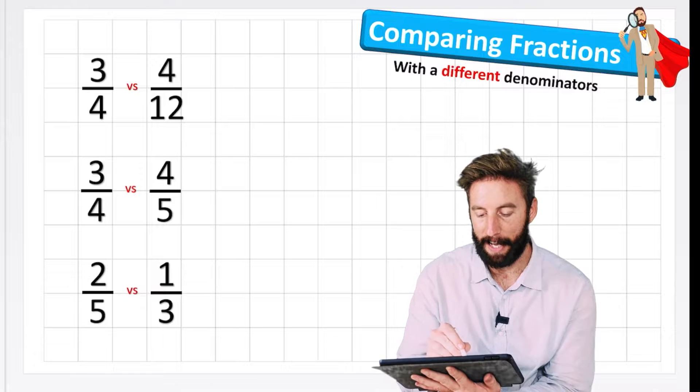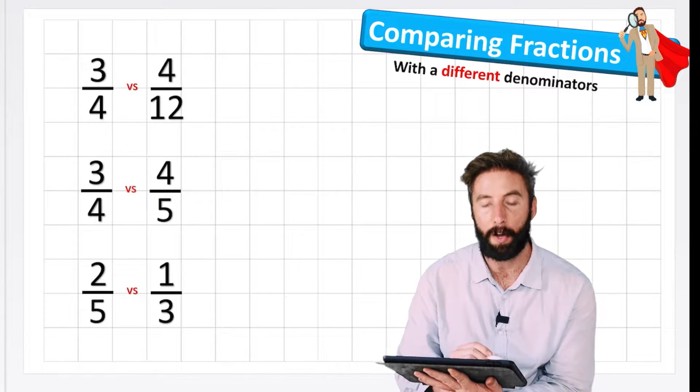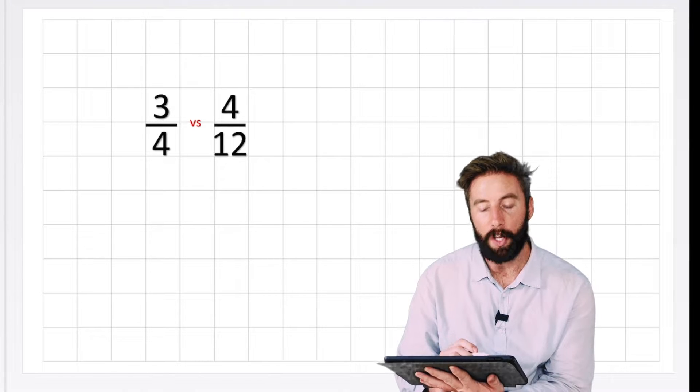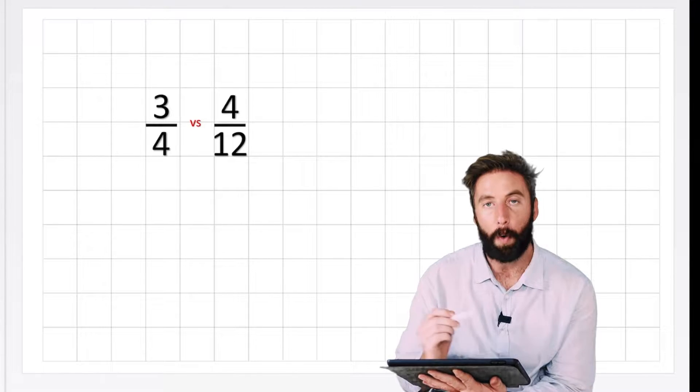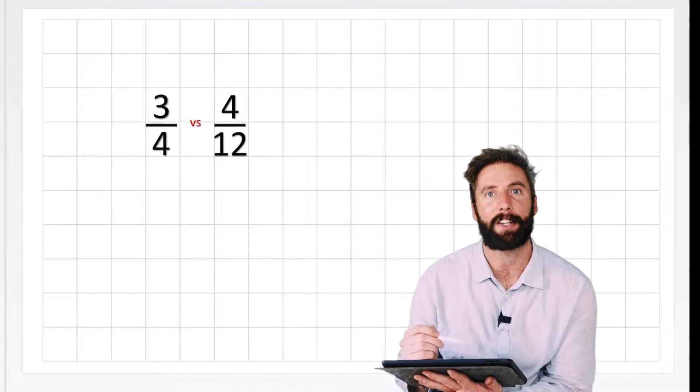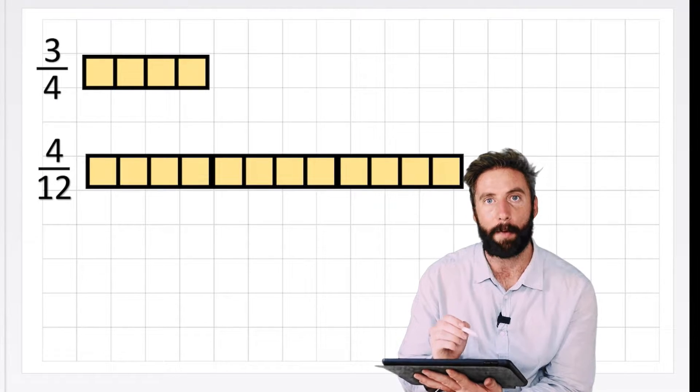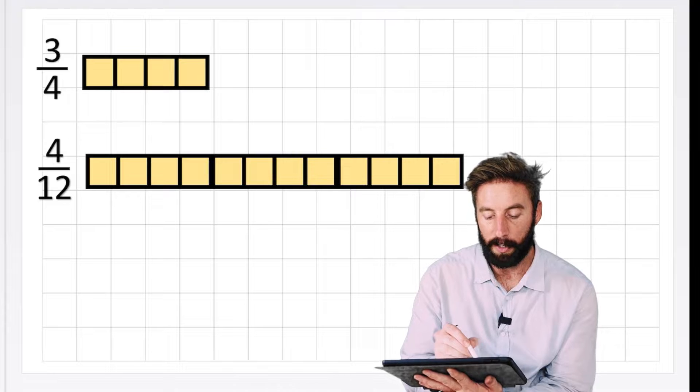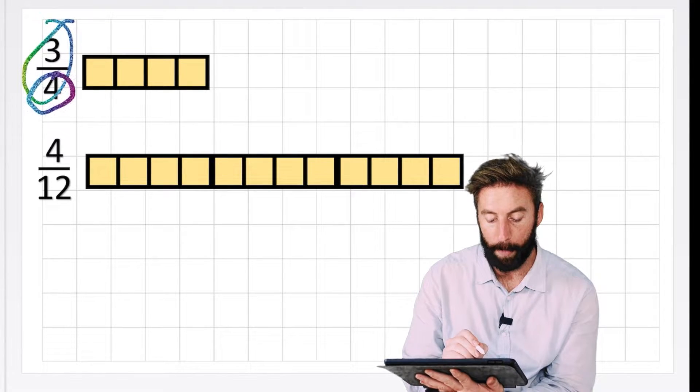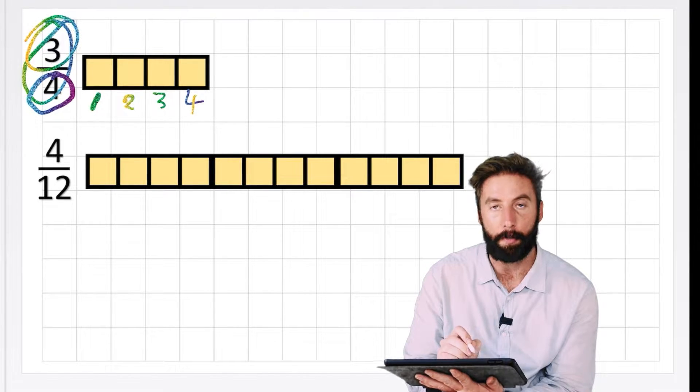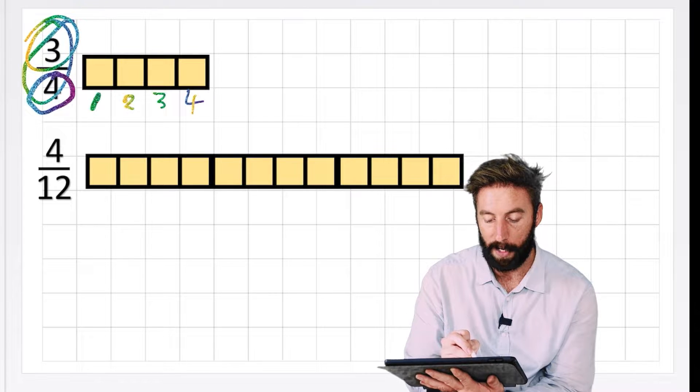So let's begin here with three quarters versus four twelfths. What we're asking is which fraction has the greater value. So we could look at it like this and say that my three quarters, this is quite clearly four is our denominator. So we need to have four sections: one, two, three, four.